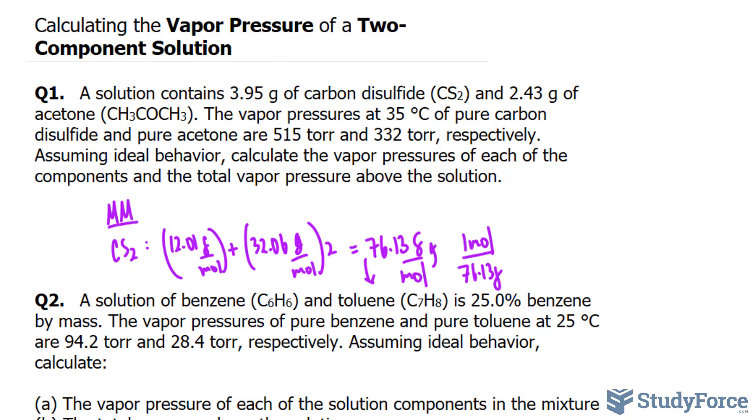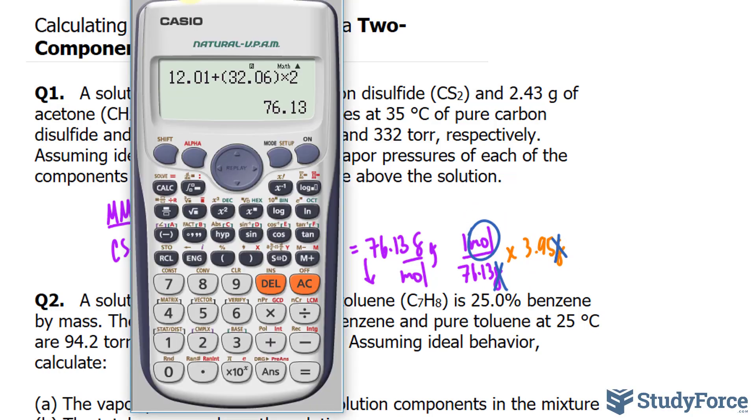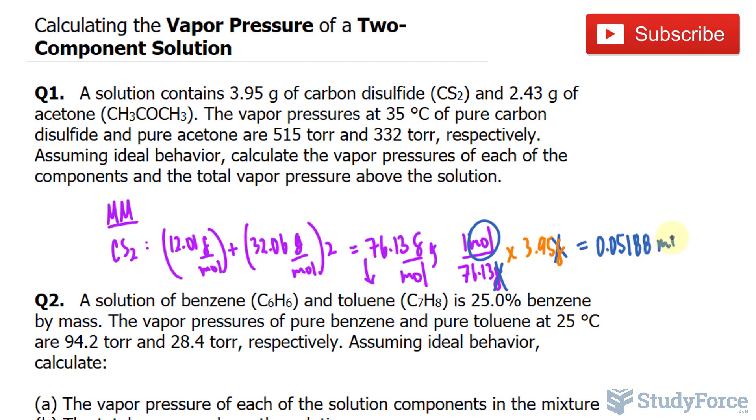The reason why I'm doing this is because I want to find the moles of carbon disulfide. And that's done by multiplying this number by its mass, which was given in the question as 3.95 grams. This unit and this unit will cancel out, giving us only moles. Let's use our calculator. 3.95 divided by the number that we just found, and we get 0.05188, and that's the amount of moles of carbon disulfide.